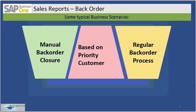A regular backorder process works like this: your customer calls and orders 100 15-point-6-inch LED screens from your company. You check the stock and see there are only 80. You deliver those 80 immediately, and the remaining 20 quantities you deliver when you receive them in your stock — either by manufacturing them or by purchasing from a vendor.